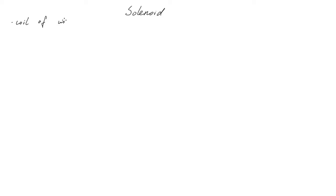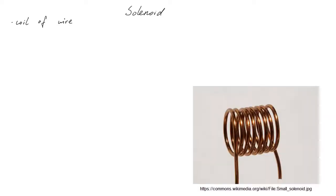A solenoid is a coil of wire. Despite being something so simple, solenoids have many useful applications. They are used in electromagnets, electromagnetic locks, and many other areas.